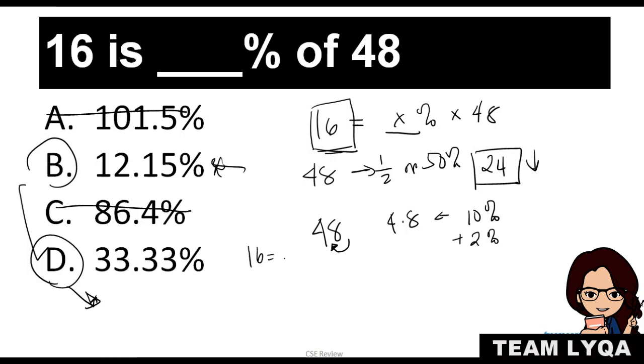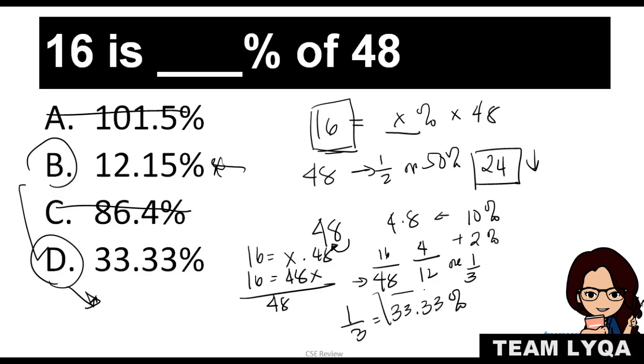Kasi, if you solve it long cut, 16 is equal to x times 48. You have 16 is equal to 48x. Didivide mo siya both sides sa 48. Ang lalabas dito would be 16 over 48. So, i-divide mo siya both sides sa 4, you will have 4 over 12 or 1 third. And ang 1 third, ang equivalent niya is 33.33 percent. So, again, you can do it long cut. You can do it this way by estimation. Whatever works for you. So, the next slide, I'm going to show it to you. Tapos, I want you to hit pause. So, you can solve it for yourself.